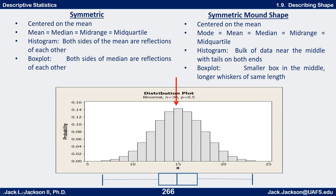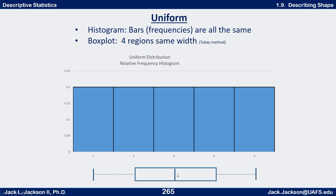You can see this on a histogram: if you find the mean — shown by the red line — and draw a vertical line down the middle of that bar, the left side is a mirror image of the right side. The same is true for the box plot: if you draw a vertical line through the median, the left side should mirror the right side. That was also true of the uniform distribution, so uniform is also symmetric.